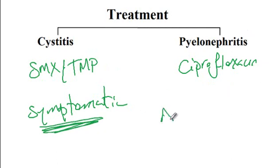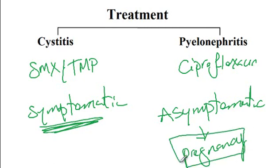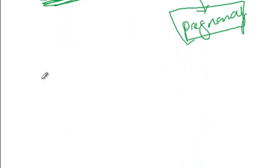The exception — where you must treat even an asymptomatic patient with antibiotics — is during pregnancy. During pregnancy there is ureteral dilation, which increases the risk of pyelonephritis because bacteria can ascend from the bladder to the kidney. So if a pregnant patient is asymptomatic but urinalysis shows signs of infection, you must treat them. For treatment during pregnancy, you cannot use fluoroquinolones like ciprofloxacin because they cross the placenta and cause fetal cartilage damage, and you cannot use sulfamethoxazole-trimethoprim because sulfonamides compete with bilirubin for albumin binding, raising fetal bilirubin levels and causing kernicterus, which damages neural structures.